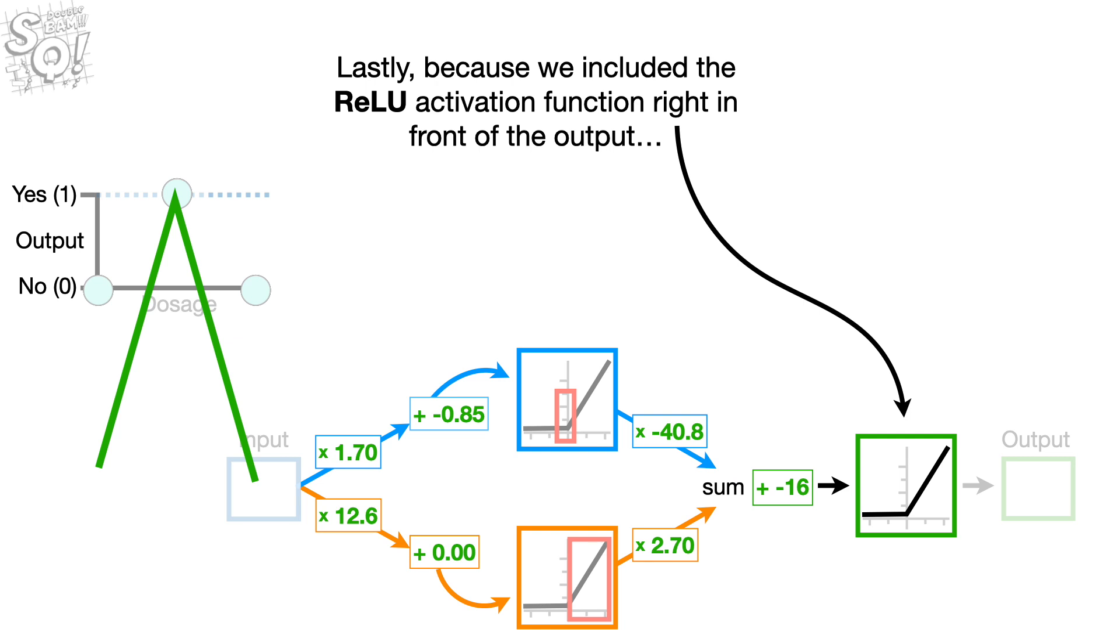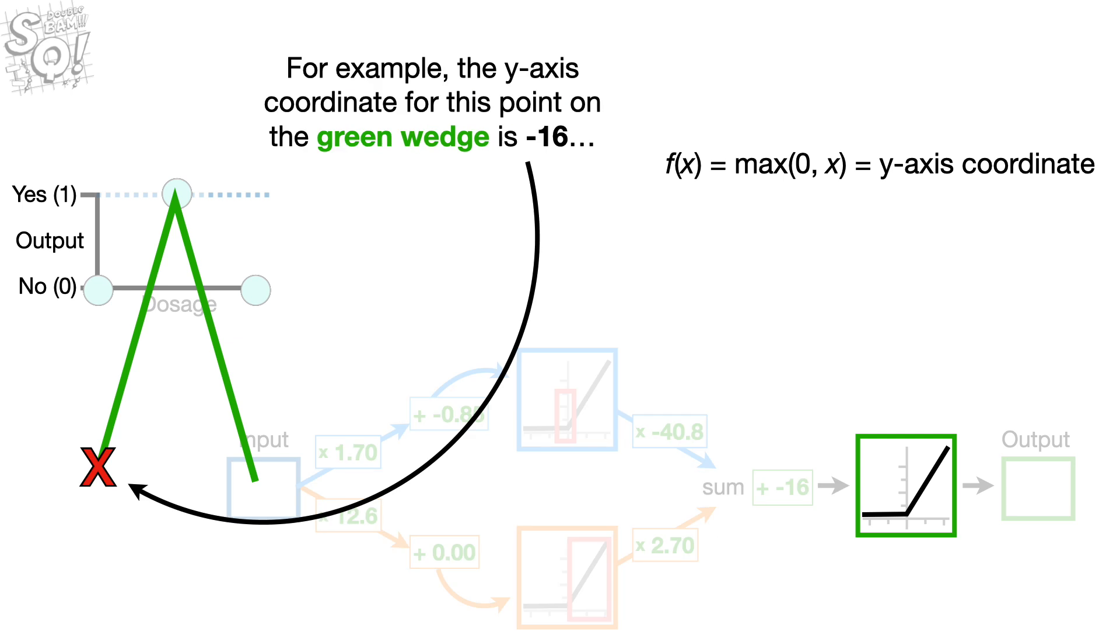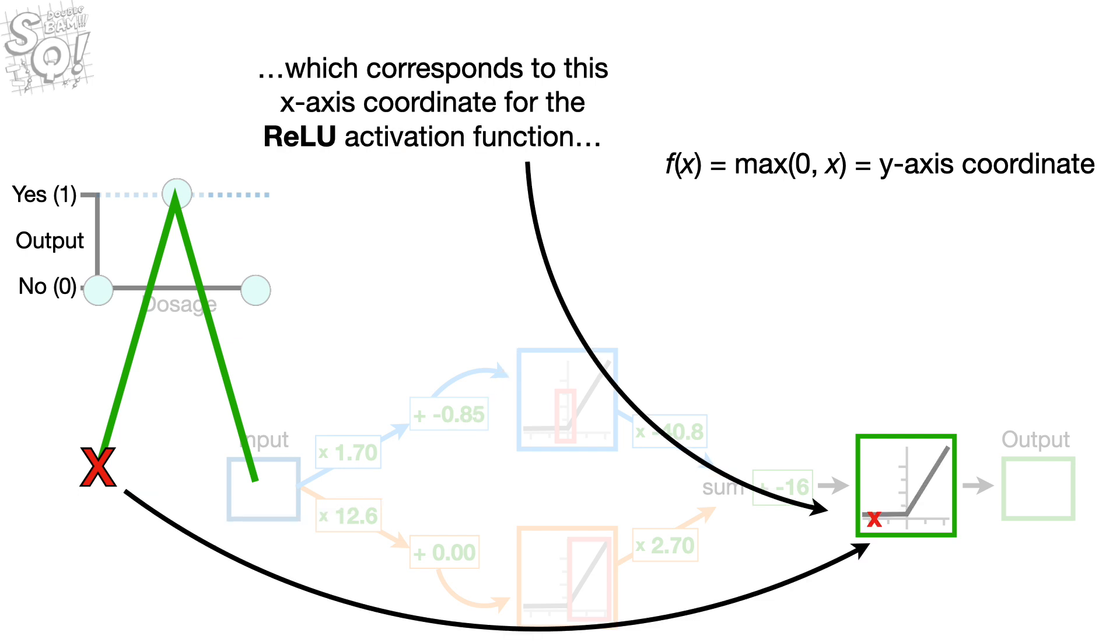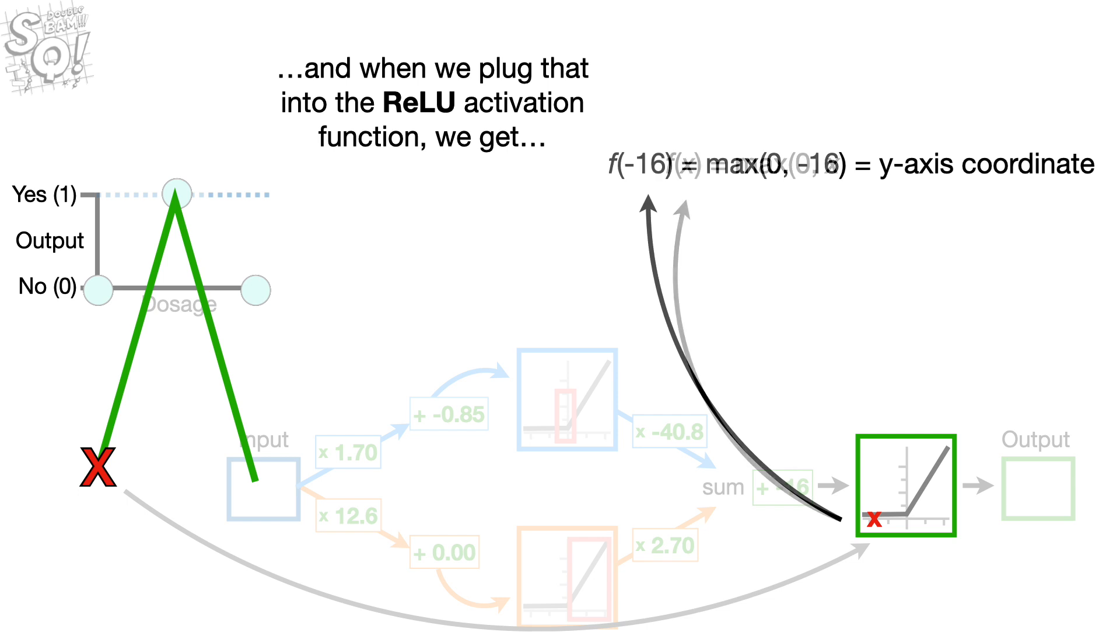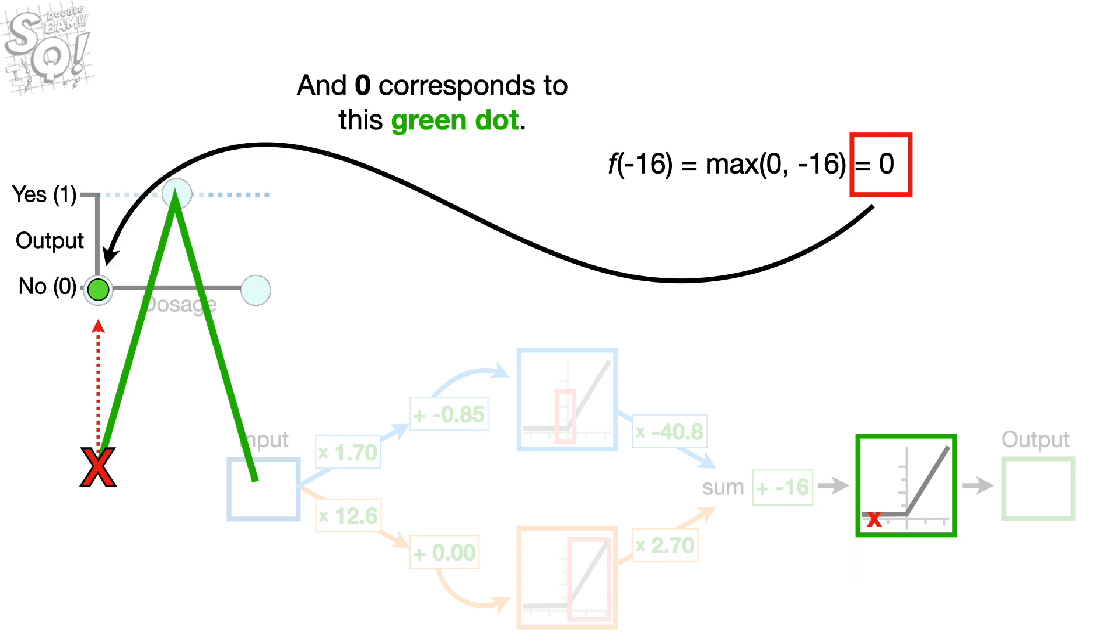Lastly, because we included the relu activation function right in front of the output, we use the green wedge as its input. For example, the y-axis coordinate for this point on the green wedge is negative 16, which corresponds to this x-axis coordinate for the relu activation function. And when we plug that into the relu activation function, we get 0, because 0 is greater than negative 16. And 0 corresponds to this green dot.